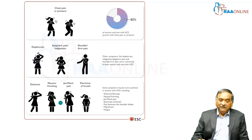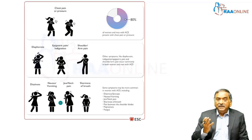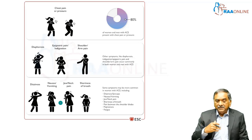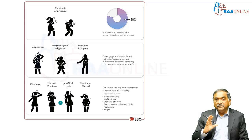For the initial evaluation: a patient comes with chest pain or pressure, retrosternal — both men and women in about 80% of situations come with this symptom, and that's very important to remember. Commonly there are associated symptoms: diaphoresis, sometimes epigastric pain, burping. Sometimes the pain is in the shoulder or arm, and these are again very important symptoms — do not ignore them.